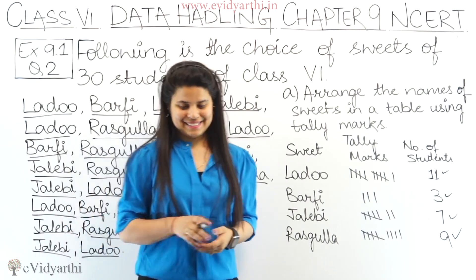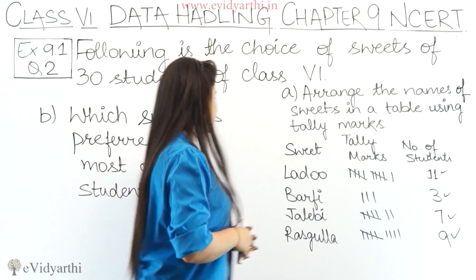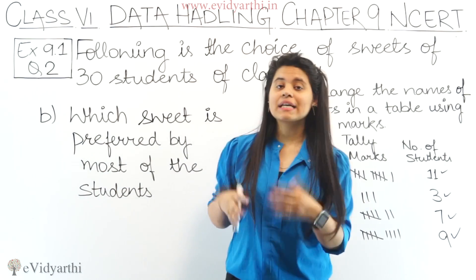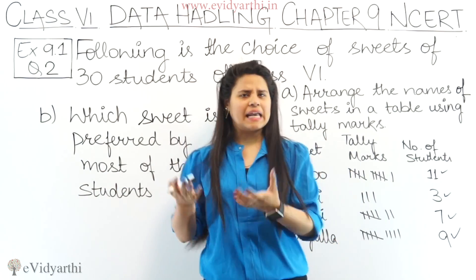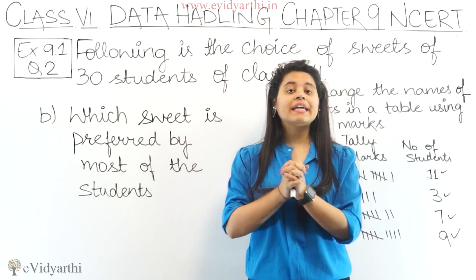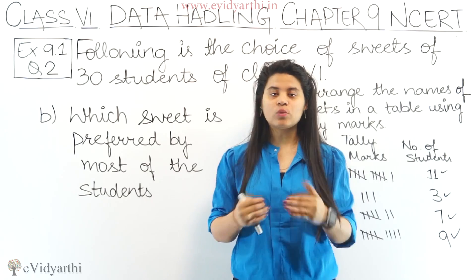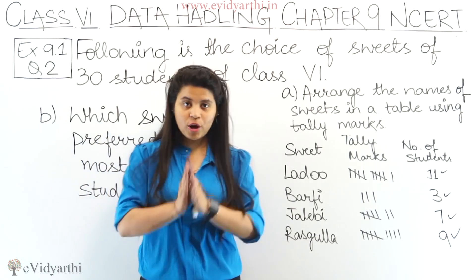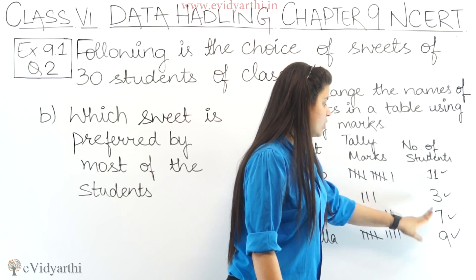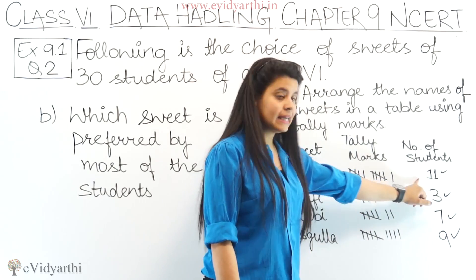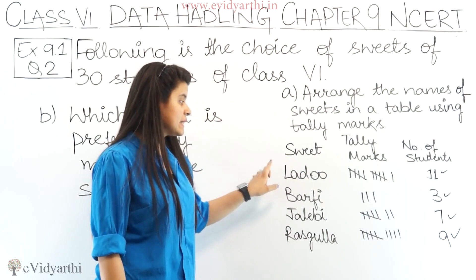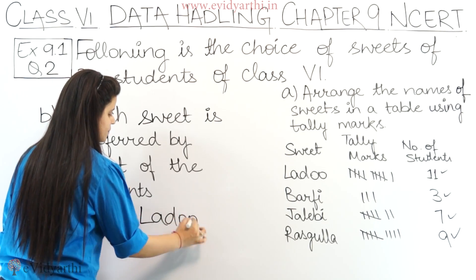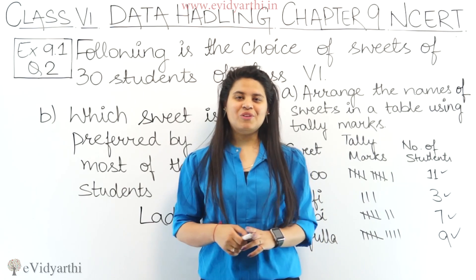Now coming to part B. In part B we need to find which sweet is preferred by most of the students. 'Preferred' means which sweet most children like. Looking back at our table, the numbers are 11, 3, 7, 9. The maximum number of students is 11, which corresponds to laddoo. So laddoo is the answer — the sweet preferred by most students.